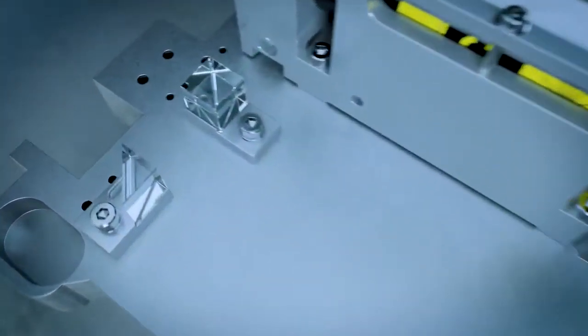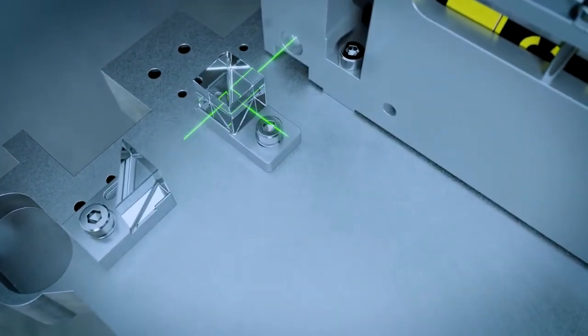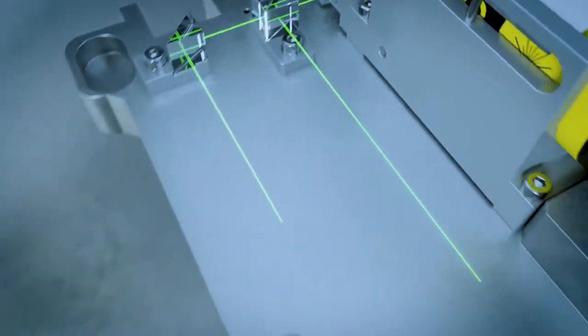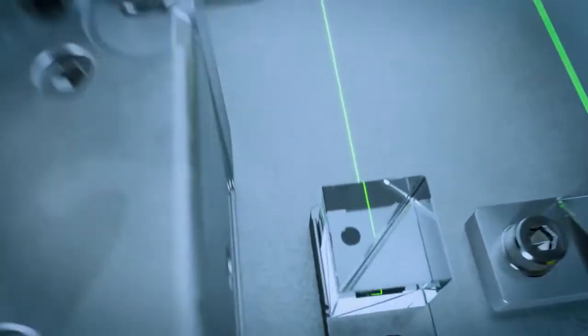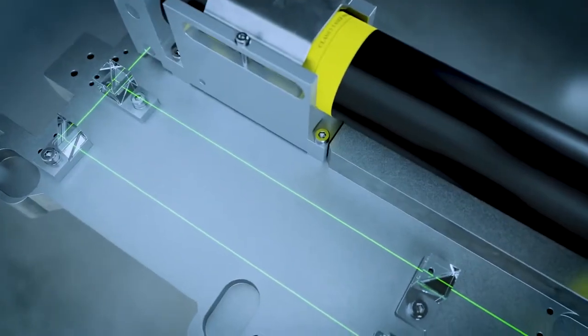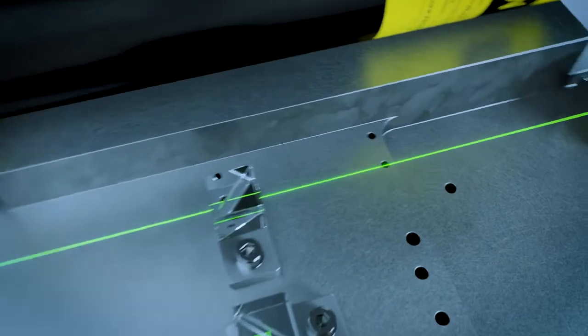To achieve this, the interferometer splits the light into two parts. The so-called reference beam is pointed directly to the photo detector, while the measurement beam is incident on the test object where the light is scattered by the moving surface.